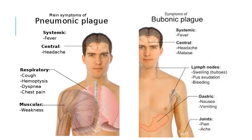The main symptoms of both pneumonic plague and bubonic plague include fever, headache, cough, malaise, swollen lymph nodes, pus exudation from lymph nodes, bleeding, nausea, vomiting, and pain and ache of the joints.